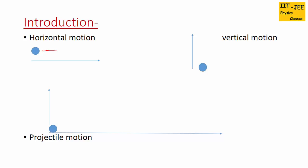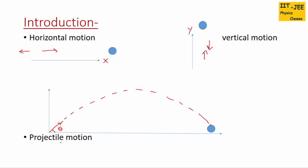If a ball is thrown towards left or towards right it is called horizontal motion and we use the x-axis to describe it. If a ball is thrown upward or downward it is called vertical motion and we use the y-axis. But if a ball is thrown at some angle theta, the ball goes up following a curved path and then comes down. This kind of motion is called projectile motion.